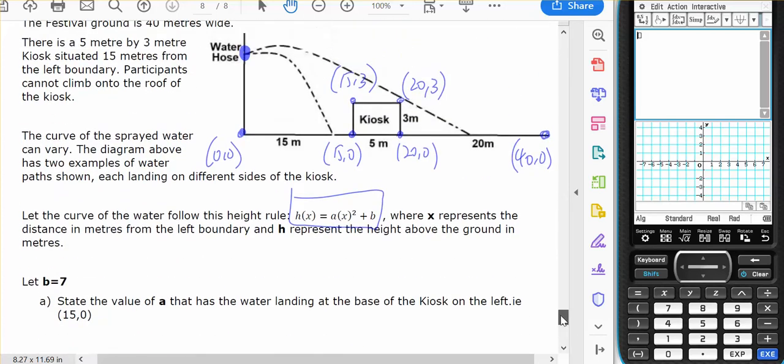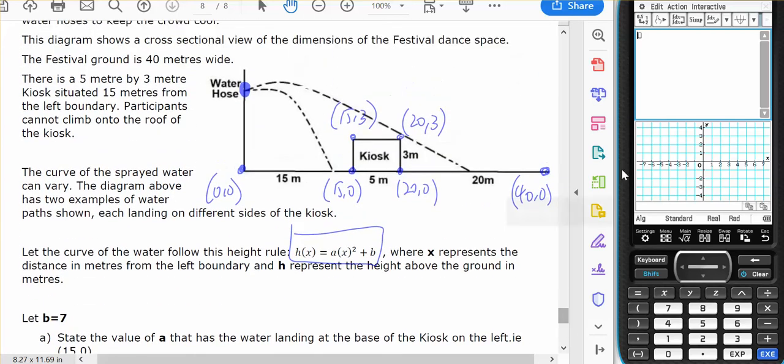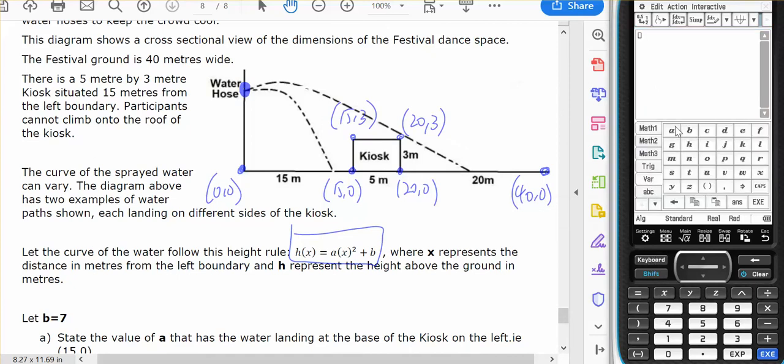Okay, so let b equals seven. So I've got ax squared plus seven and a is at the moment equally negative two. So clear all variables and we'll try that again and I'll get ax squared plus seven. So we're saying that that is seven up there.